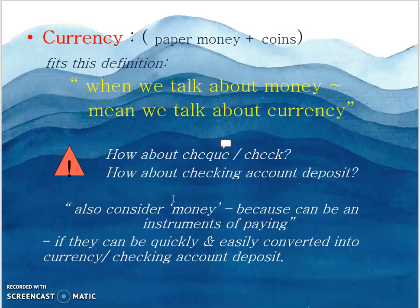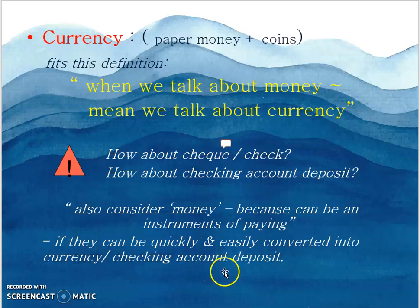Currency is paper money and coin. It fits the definition of money. How about checks and checking account deposits? These are also considered money because they can be quickly and easily converted into currency. A check is considered money because it can be quickly and easily converted into currency.